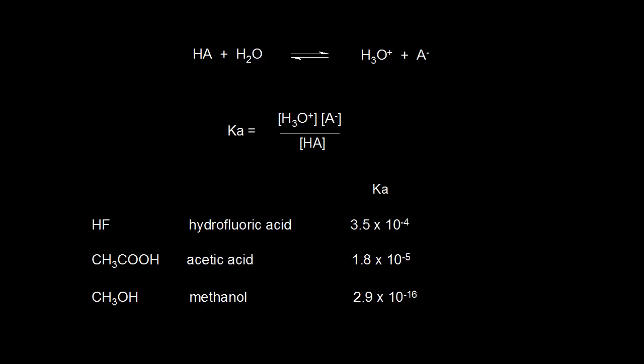We've already talked about how to write an equilibrium expression. So if we have some generic acid HA that donates a proton to H2O, H2O becomes H3O plus, and HA turns into the conjugate base, which is A minus.